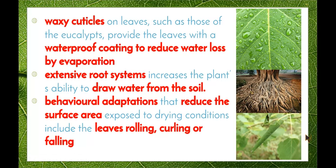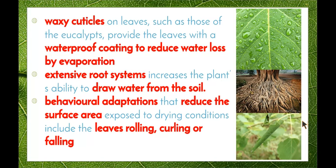Some behavioural adaptations of plants are worth considering — we don't often think of plants having behavioural adaptations, but they can change their orientation to reduce surface area exposure. For example, a leaf can roll: when it gets warm, water leaving the leaf is trapped within the rolled section and doesn't escape to the atmosphere. Similarly, leaves can curl, or if there is insufficient water, plants can shed their leaves entirely, so they're not expending energy and water trying to keep those leaves alive.